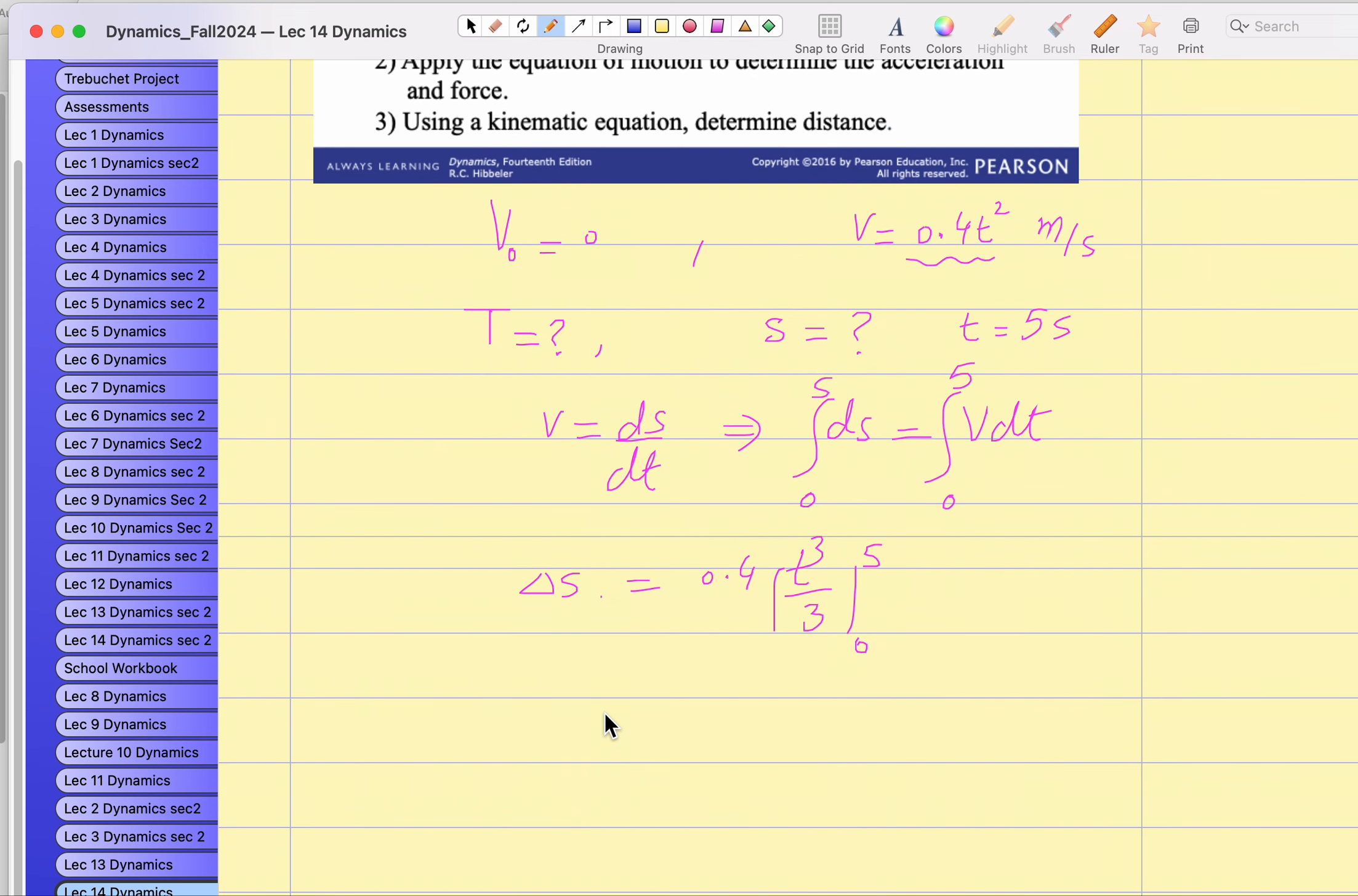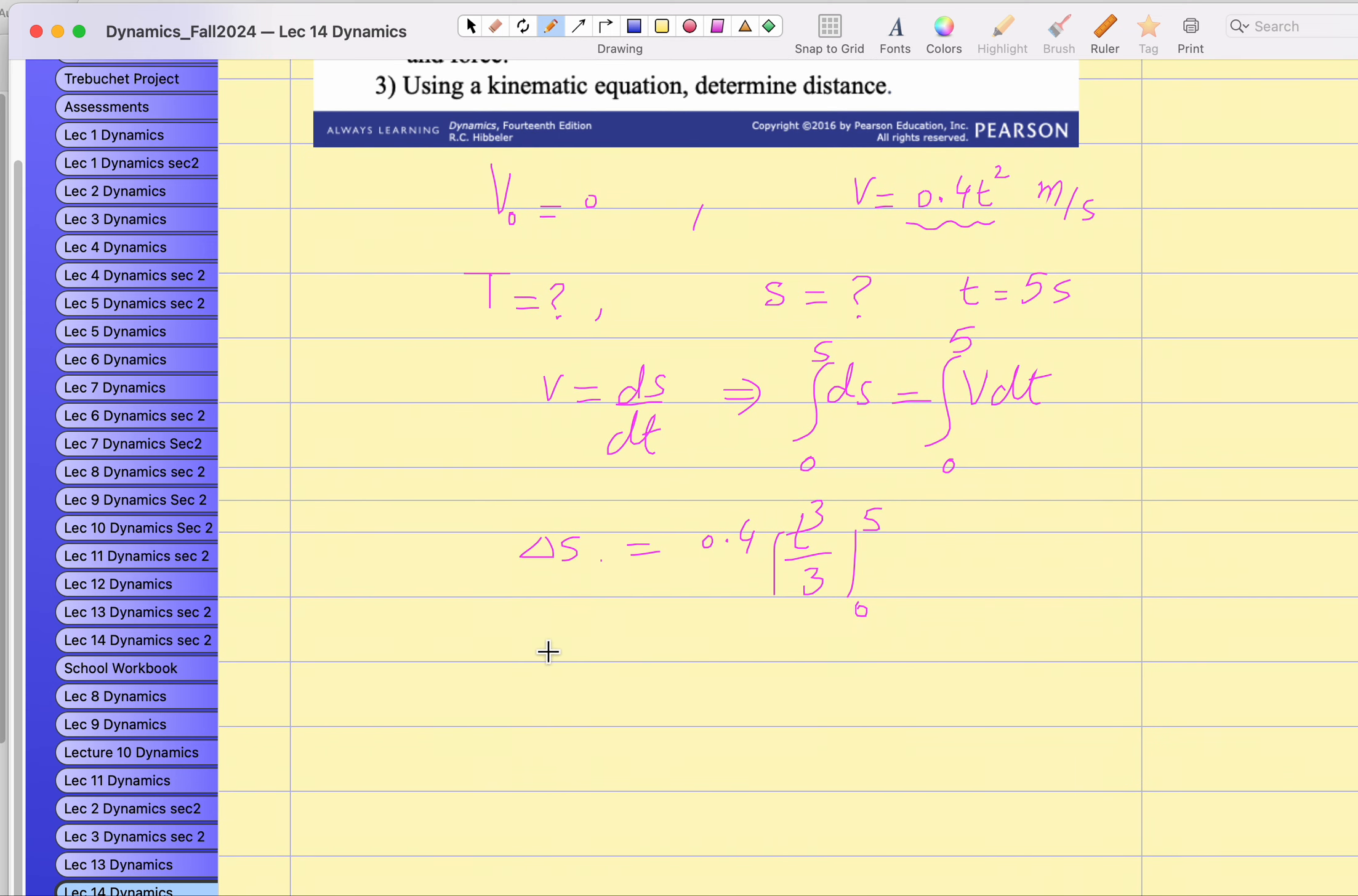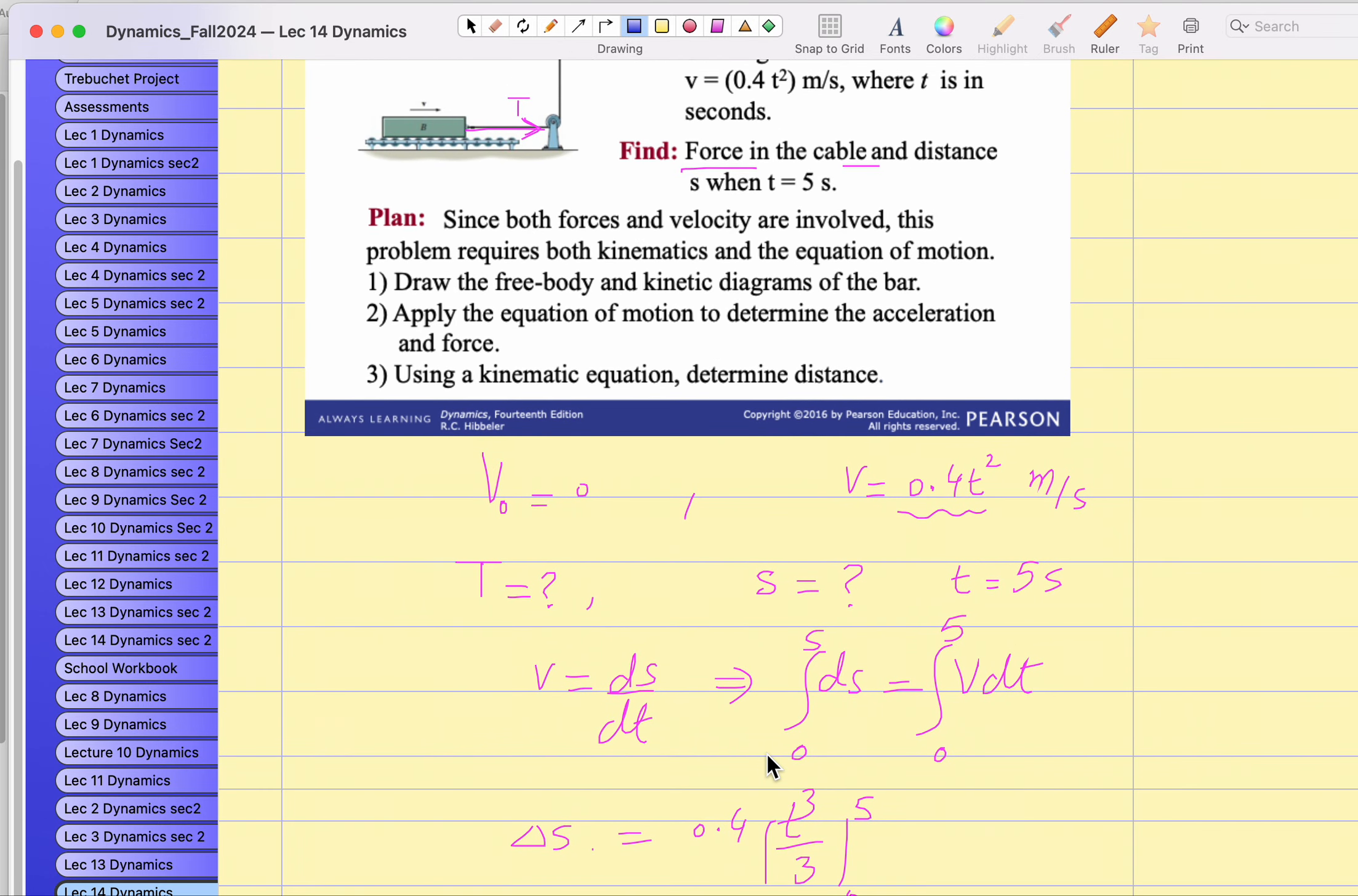Delta S on the left hand side, we have to find delta S, which is the final minus initial position, S minus S zero. If you do the math, 0.4 over 3, you should be able to get this answer. You can verify in your calculator. So this is the answer for the second part of the question.